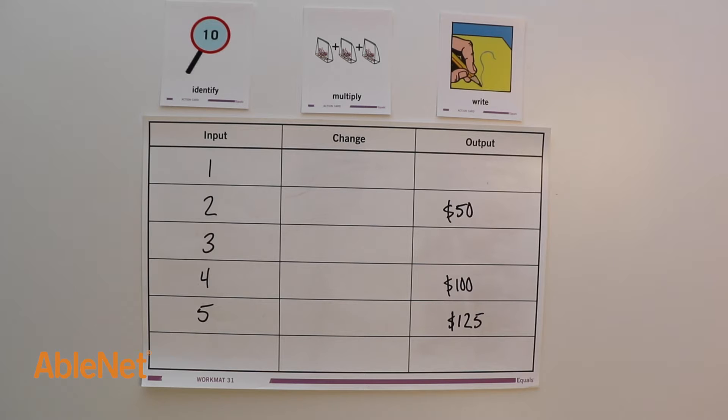I will start by identifying the known input change in the table. From the problem, I know the cost of one case is $25. The change is $25.